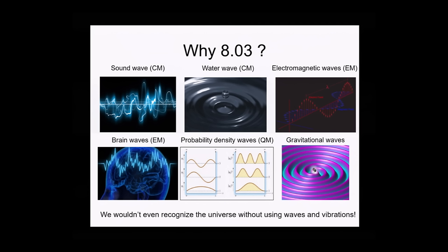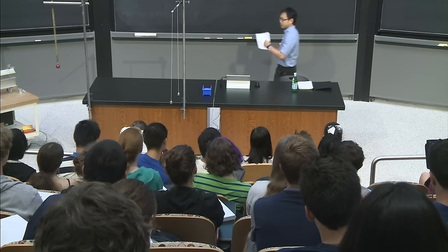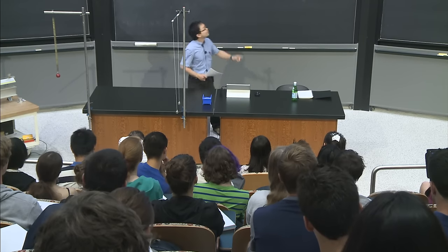That translates to your brain waves, and you start to think about what this instructor is trying to tell you. All those things we learn in 8.03 are closely connected to probability density waves, which you will learn in 8.04, quantum physics. And finally, it's also closely related to the recent discovery of gravitational waves. When we sit here, maybe there are already some space-time distortions passing through our body, and you don't feel it.